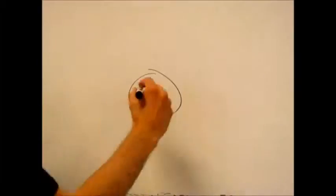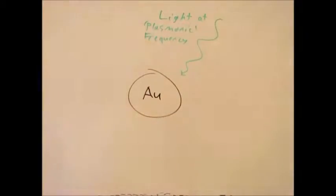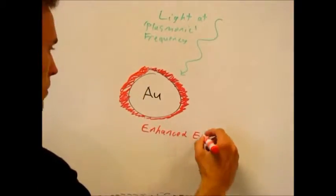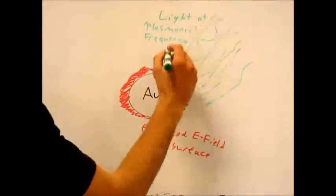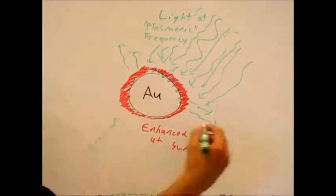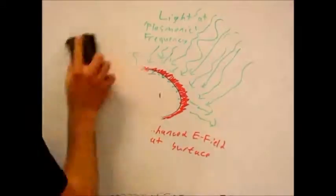Surface plasmon resonance arises at the interface between a dielectric and a conductive material. This resonance enhances the absorption and scattering of the particles, as well as the electric field surrounding the particles.